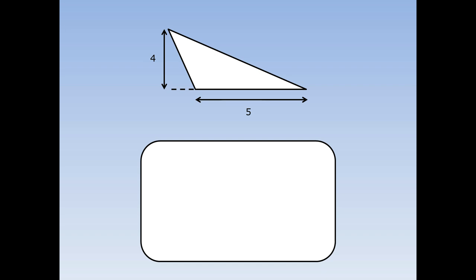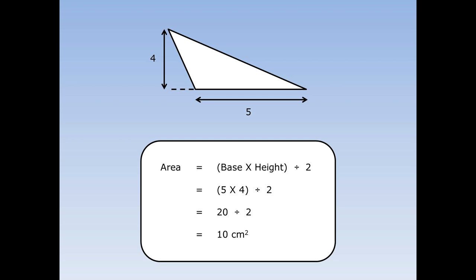The base of this triangle is 5 and the perpendicular height is 4. To find the area, write out the formula: area is base times perpendicular height divided by 2. Fill in the numbers — the base is 5 and the perpendicular height is 4. 5 times 4 is 20, and 20 divided by 2 is 10 centimetres squared.